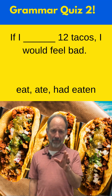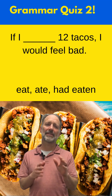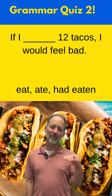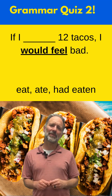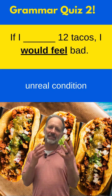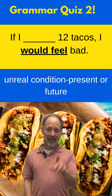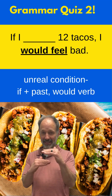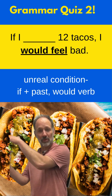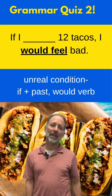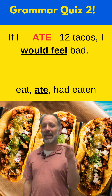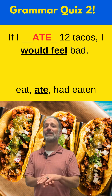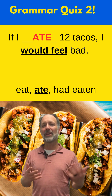Fill in the blank with the correct verb form for this conditional sentence: If I blank 12 tacos, I would feel bad. I see 'would feel,' which tells me this is an unreal situation in the present or future. For those sentences, the pattern is if plus past tense, comma, would plus the verb. So the answer is: if I ate — past simple — 12 tacos, I would feel bad. You're saying it's an unreal situation.